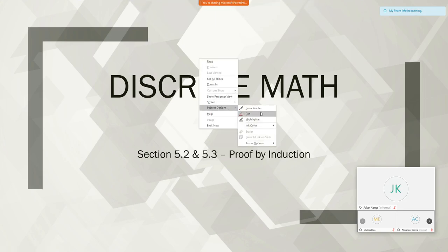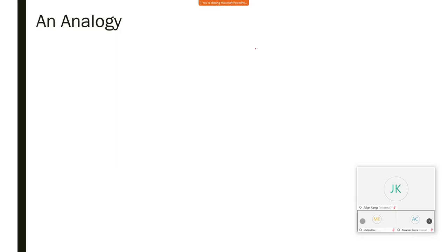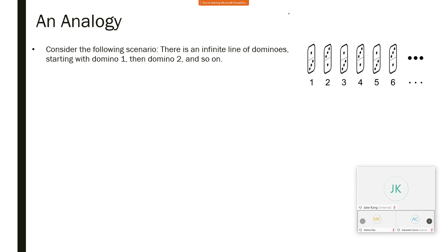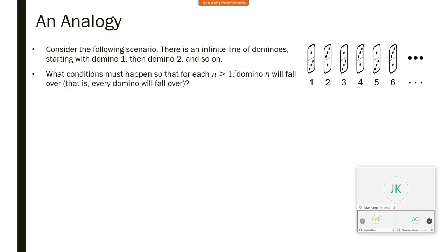Proof by induction. Induction is a lot like dominoes. Let's say that you have an infinite line of dominoes — infinite in the sense that you have domino one, domino two, domino three, domino four, and so on and so forth, and it goes on literally forever. What conditions would we need so that every domino falls over? Well, they have to be standing up first, but let's assume they're all standing up in the perfect line.